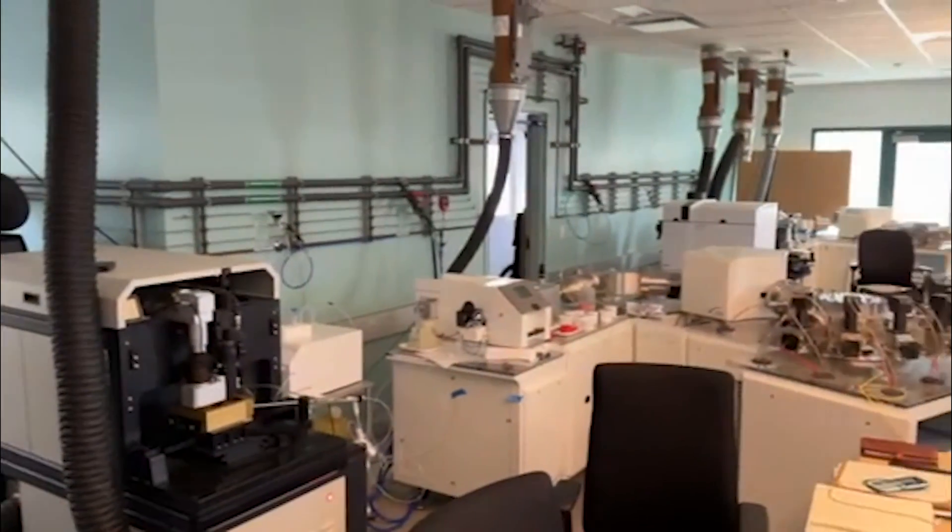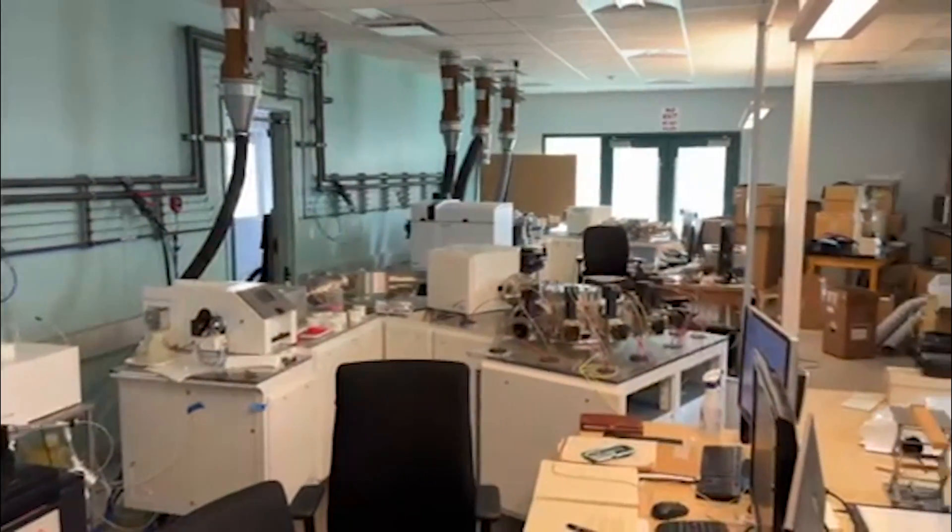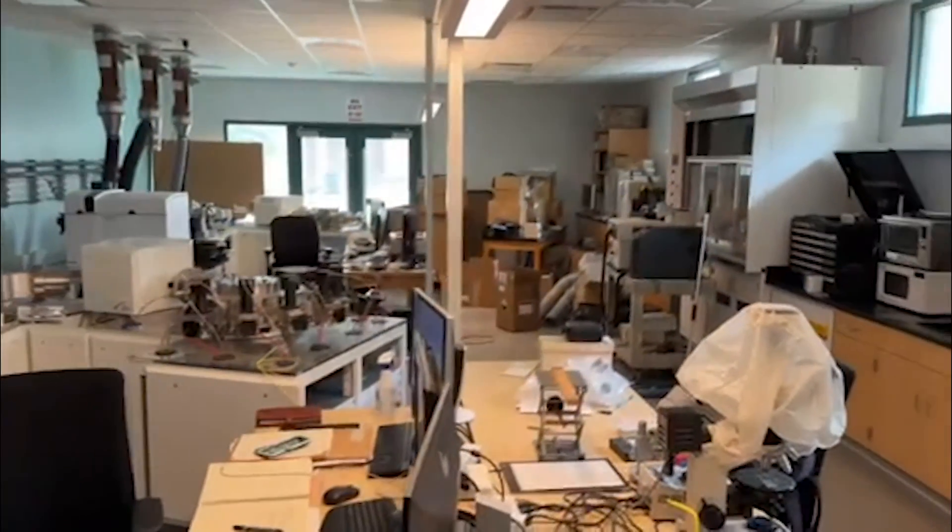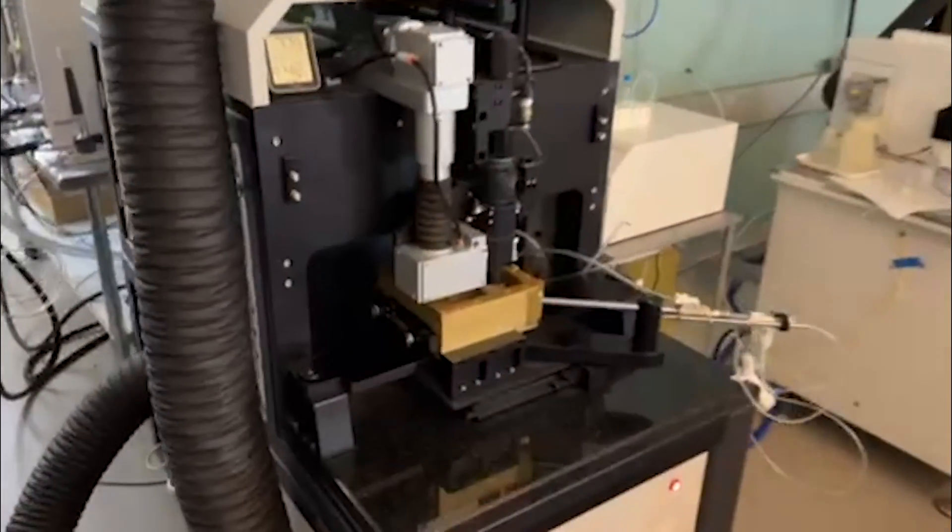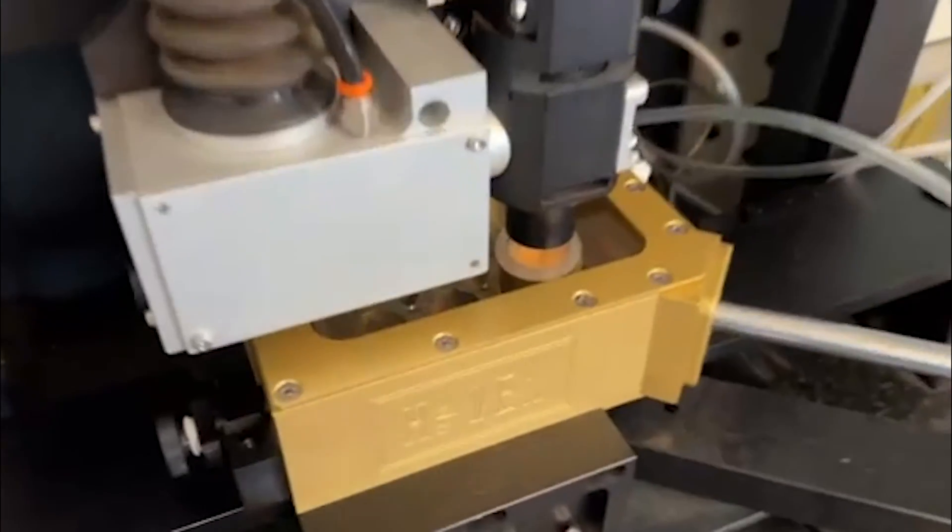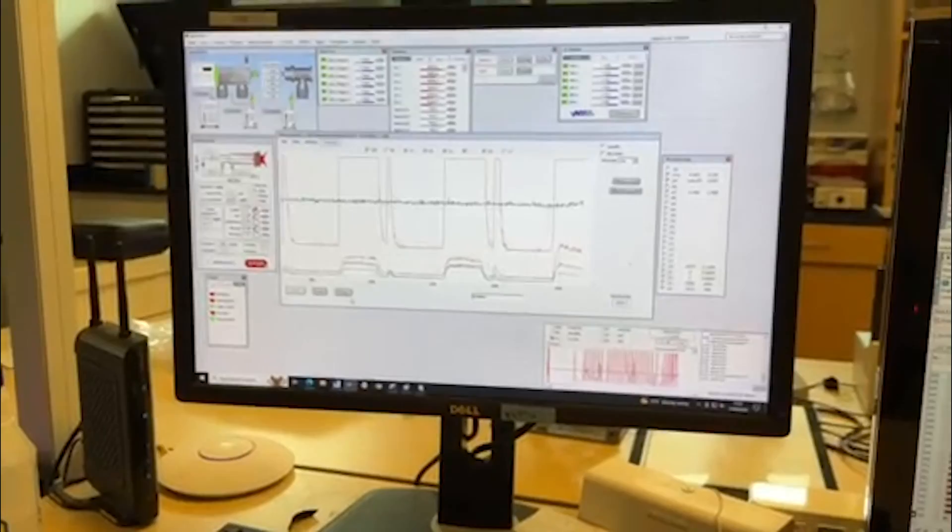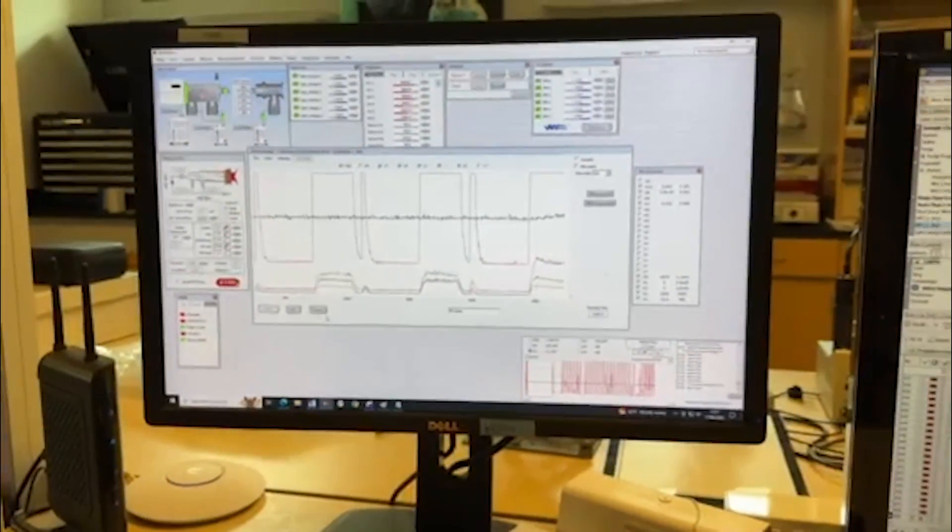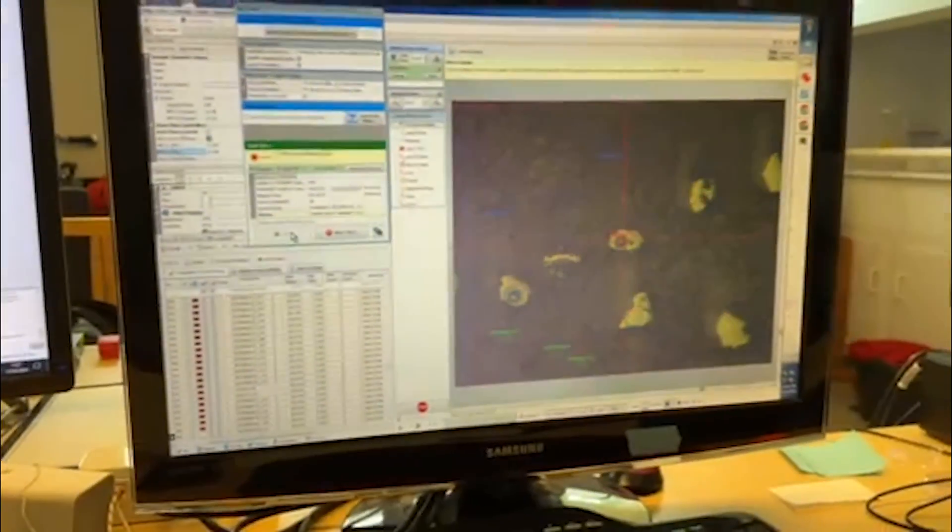Now we pack up our precious cargo for a trip to a lab in Santa Barbara, California. Here we analyze multiple grains from each sample on a mass spectrometer. Each grain has a different abundance of radioactive elements, and we use the ratio of these elements to calculate the age of the sample.